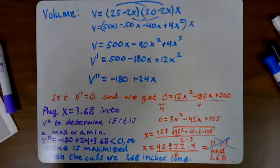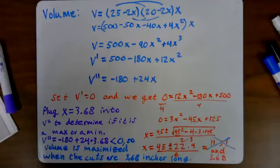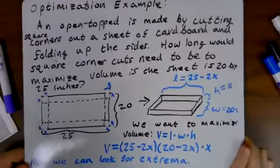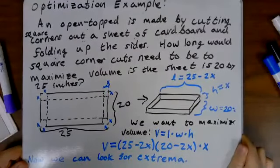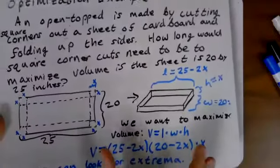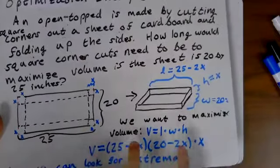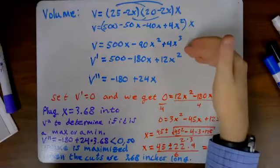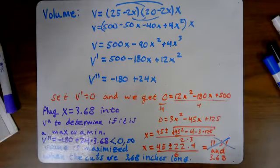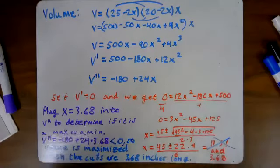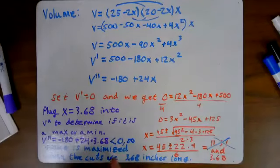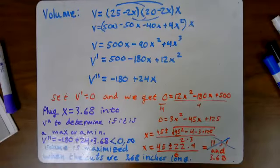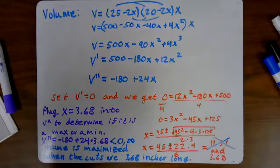So we took a real life system, we determined a formula that described it using only one variable. We used that formula, found the first derivative and solved it for 0 to find places where it could be maximum or minimum, and we tested those to determine which of those actually was a maximum. We found it. Does anyone have any questions about this process?